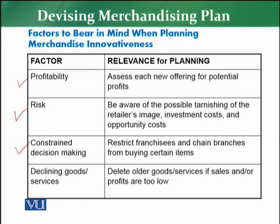The next factor is constrained decision making. The retailer has to see that if they are offering franchises or chain branch stores, they need to determine how to control and restrict their buying organization at a certain level. Then, declining goods and services is the next factor — they need to delete older goods and services and reduce low-profitable goods and services.